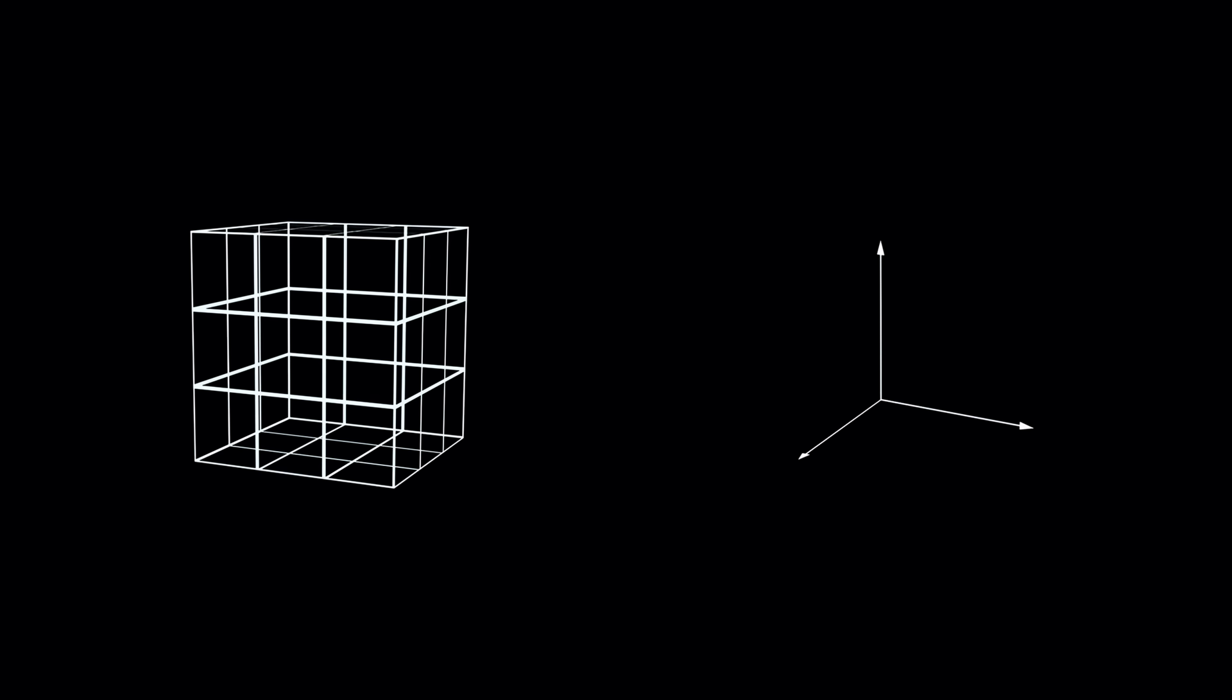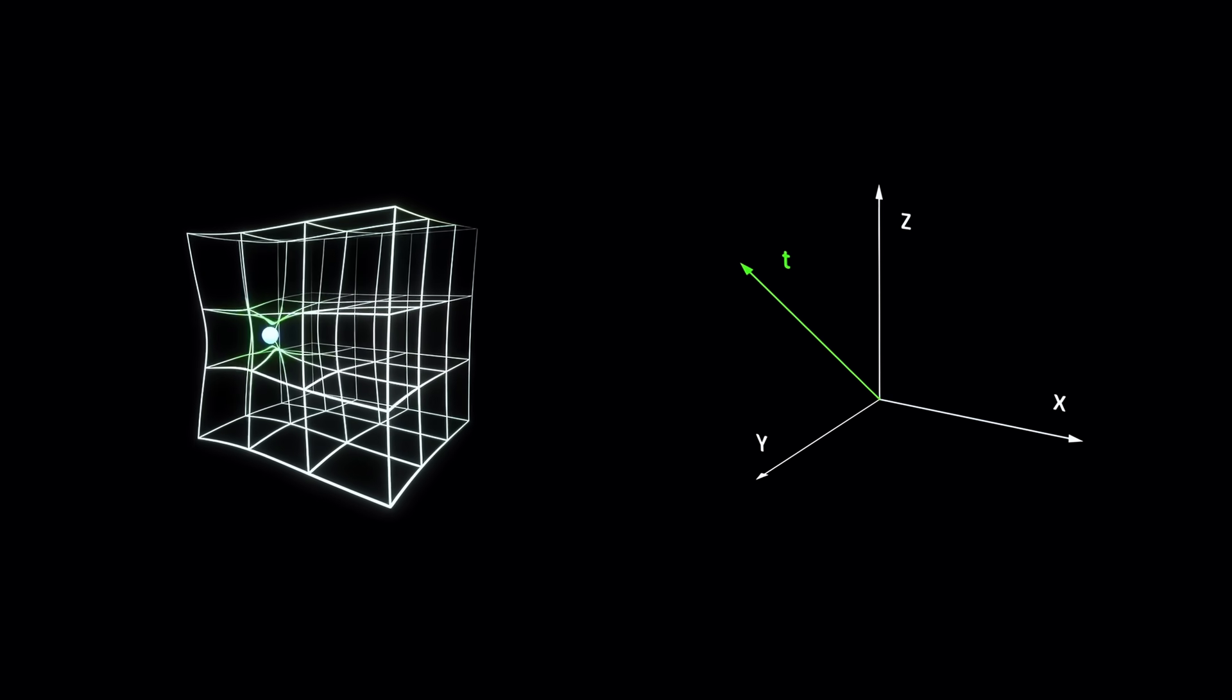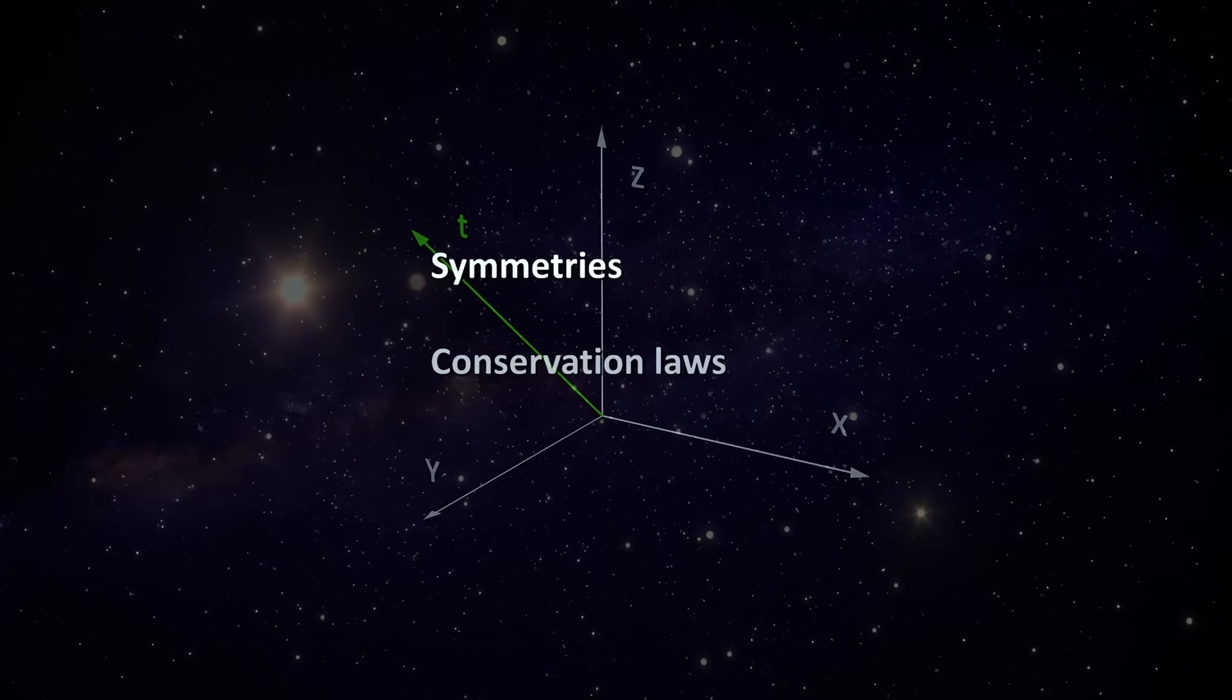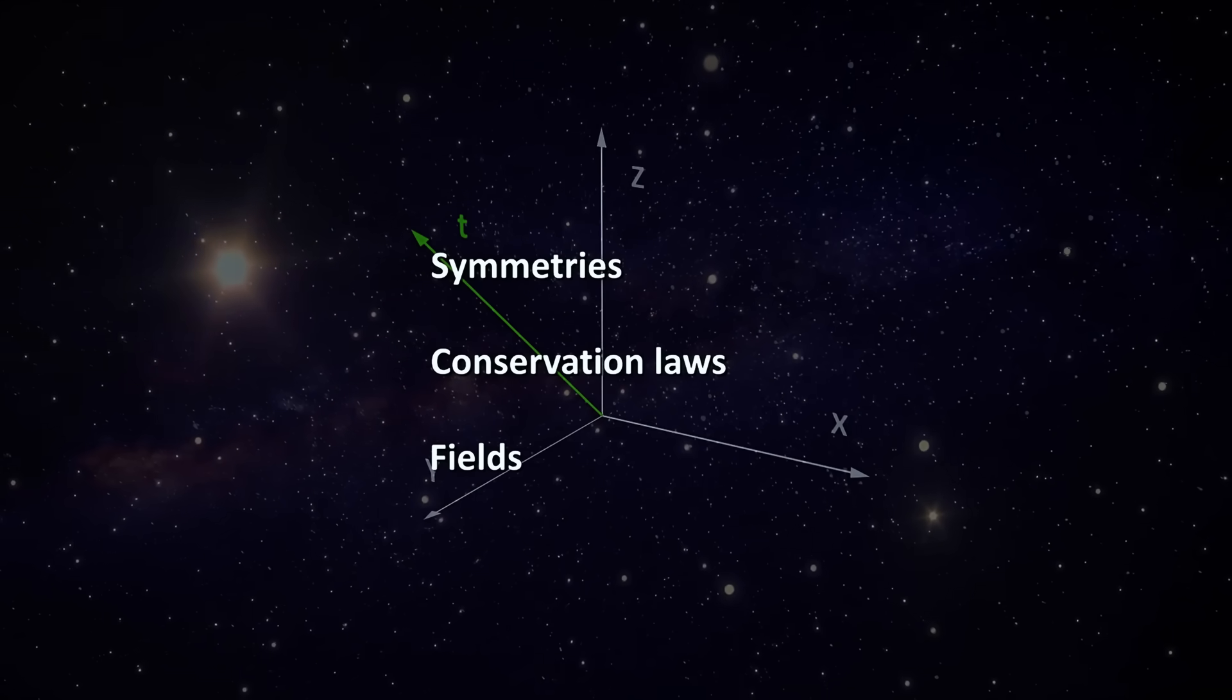First, we need a canvas on which to build our universe. That canvas is space-time, which consists of three spatial dimensions and one time dimension. On this canvas, the first toolkit of physics consists of three essential elements: symmetries, conservation laws, and fields.